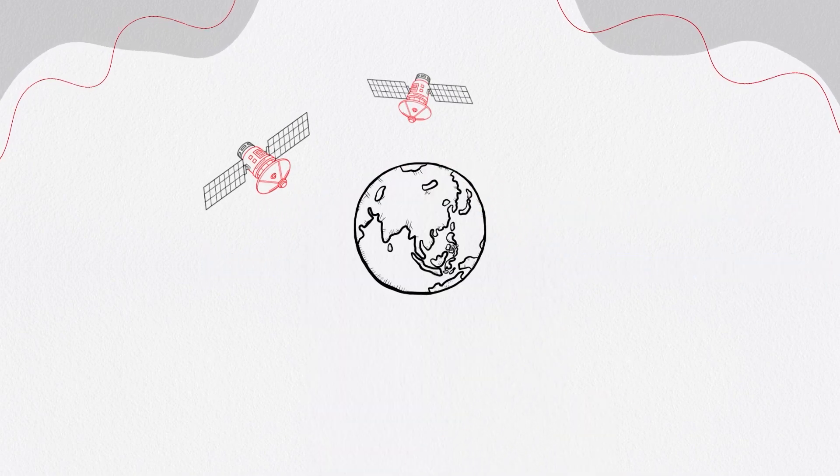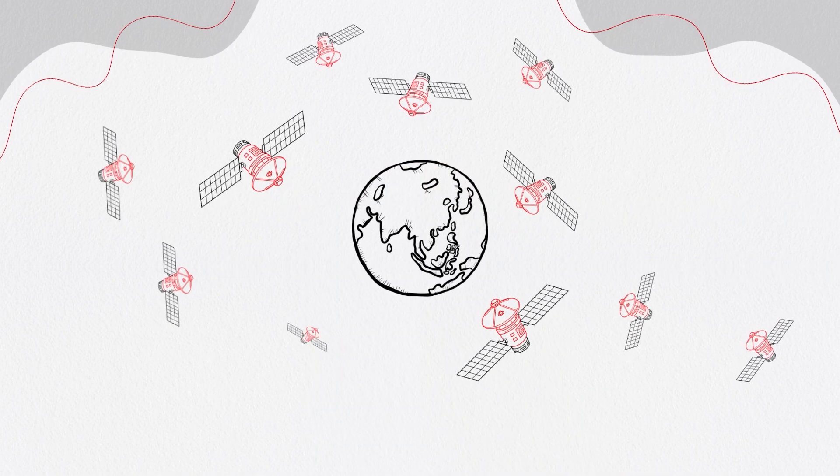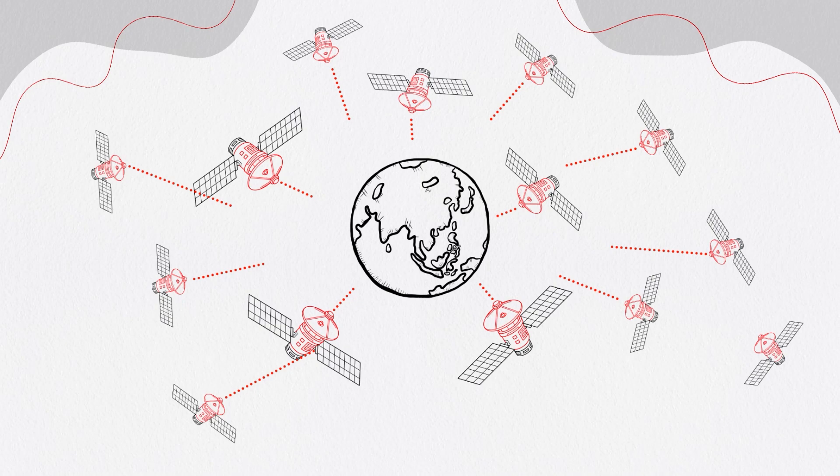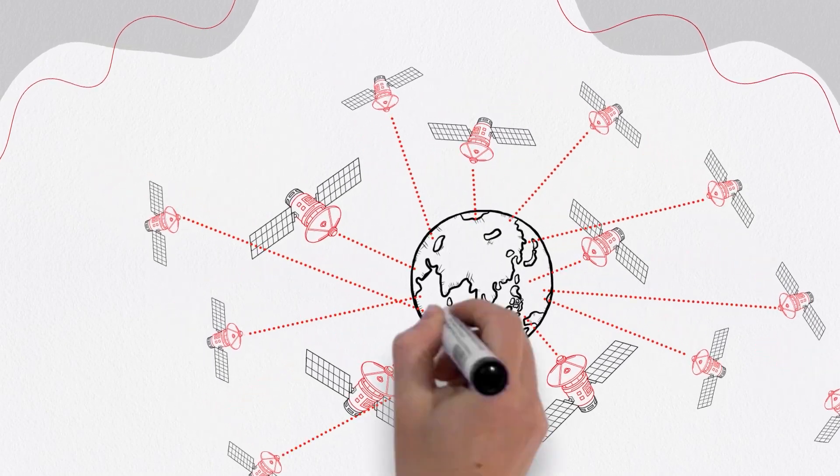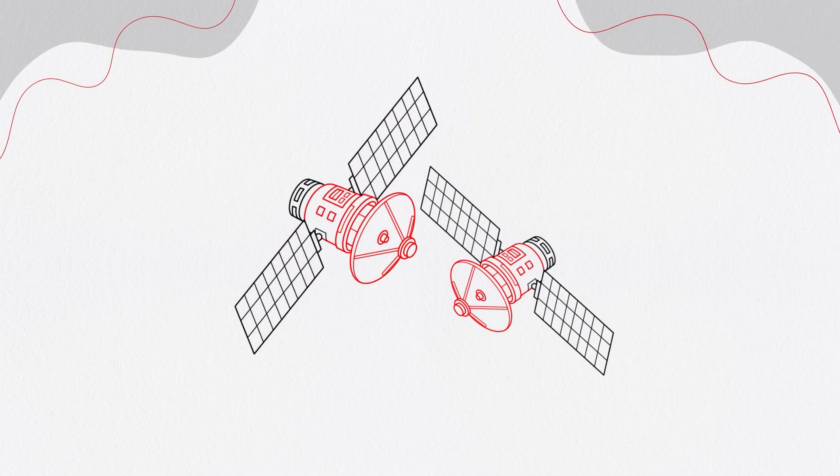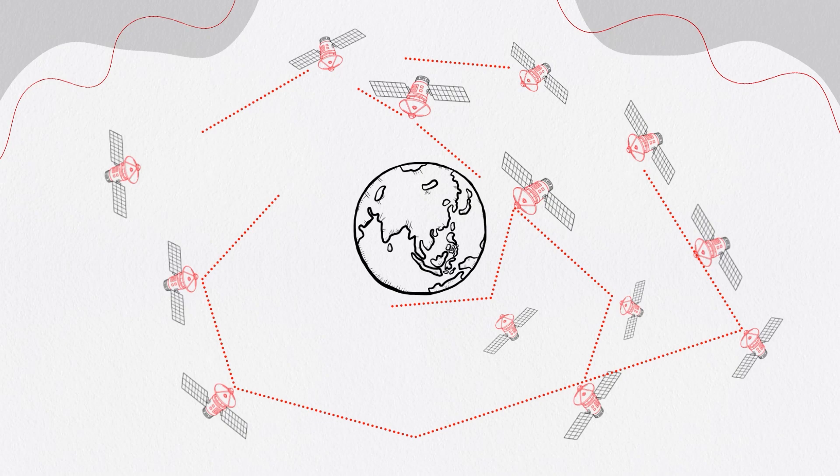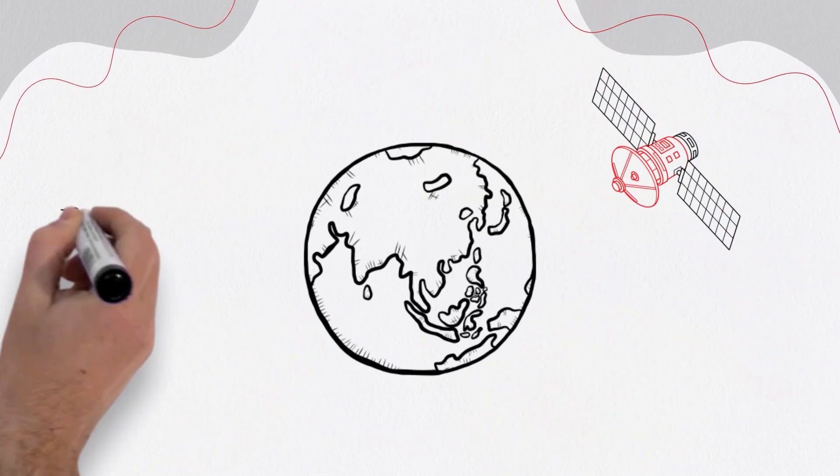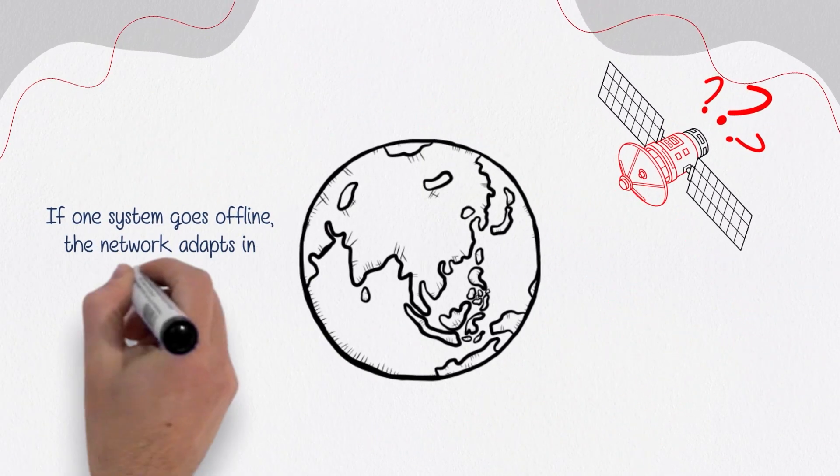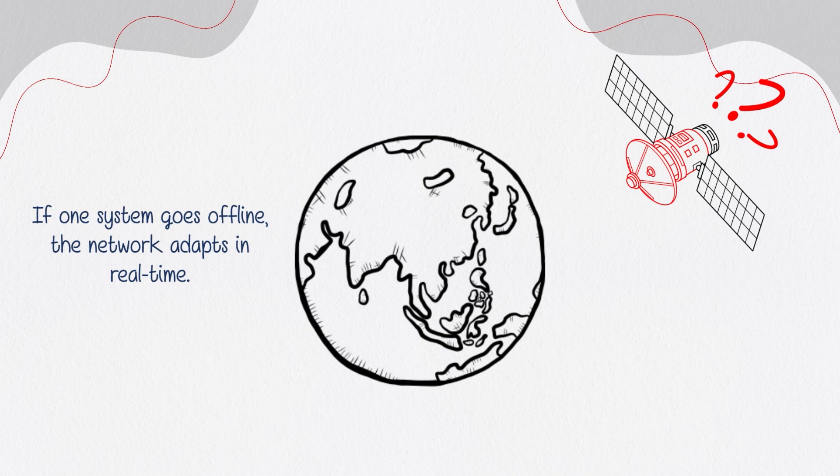Now, scale that to 100 satellites. Each becomes its own intelligent agent. They collect and route data. They maneuver to maintain course or avoid collisions. They share critical intel. If one system goes offline, the network adapts in real-time. That's resilience.